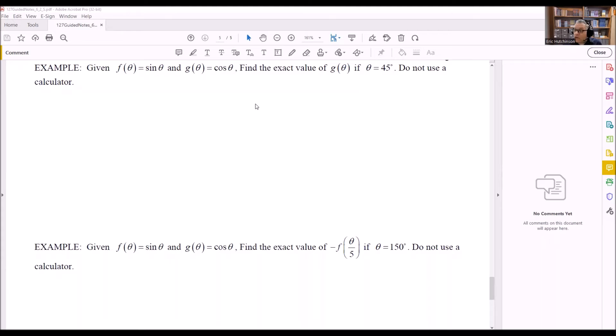First thing that we want to do is evaluate what is given. So what we're told here is θ = 45°. So first thing we'll do is put in 45 into here. So I want to find g(45°) first.